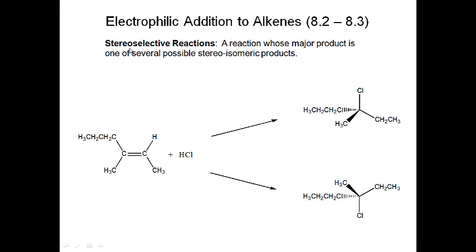There are also stereoselective reactions. A stereoselective reaction is one whose major product is one of several possible stereoisomeric products. Again, we still have the term 'selective' — so if the reaction produces a 50-50 mixture or only one product, it cannot be stereoselective. Examples of stereoisomeric products include enantiomers and diastereomers.